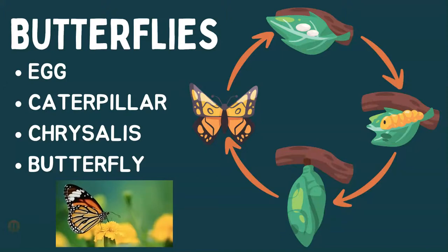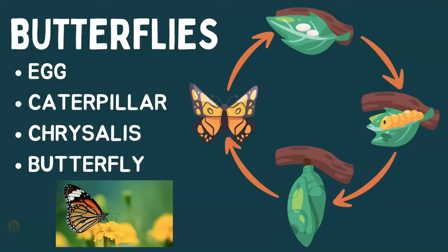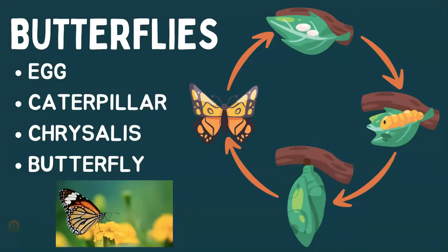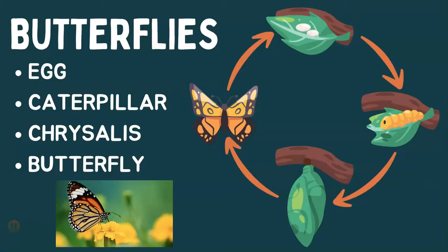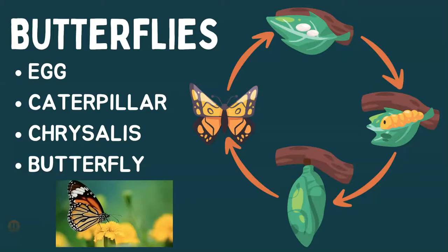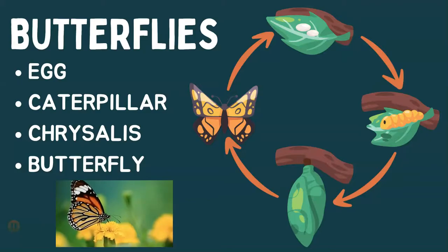Then they hatch into caterpillars, which eat a lot and grow quickly. After a while, the caterpillar forms a chrysalis — a special shell — and it goes through a magical transformation. Finally, it emerges as a colorful and beautiful butterfly, ready to start the cycle all over again.